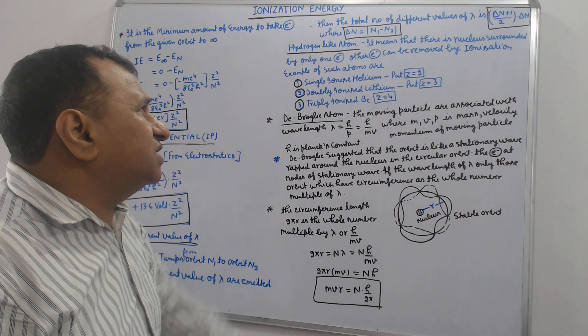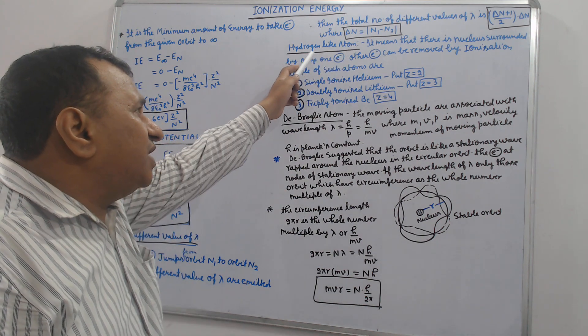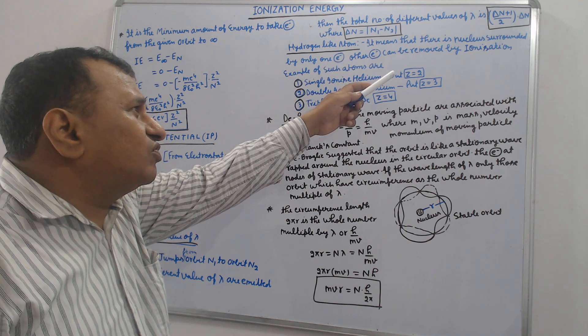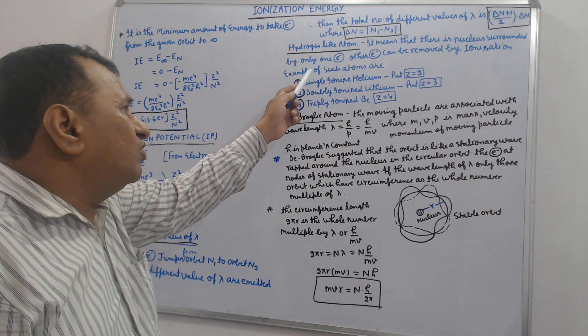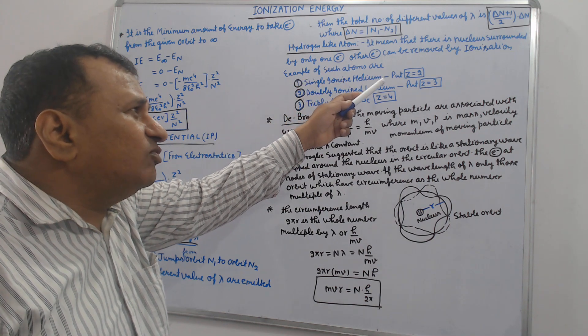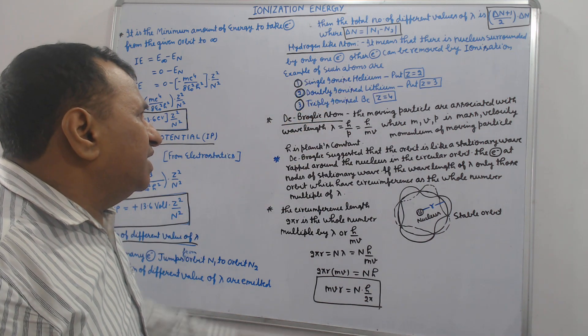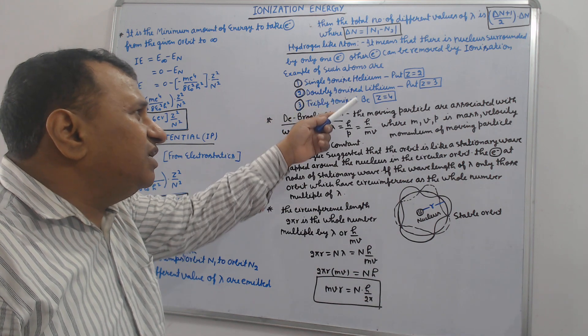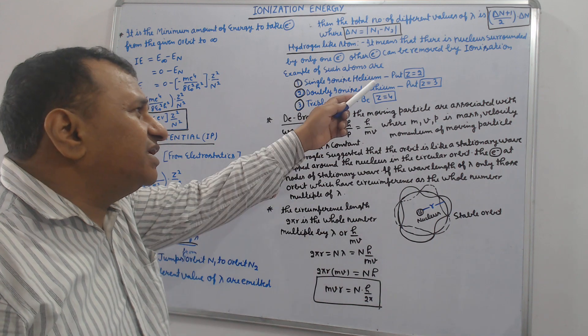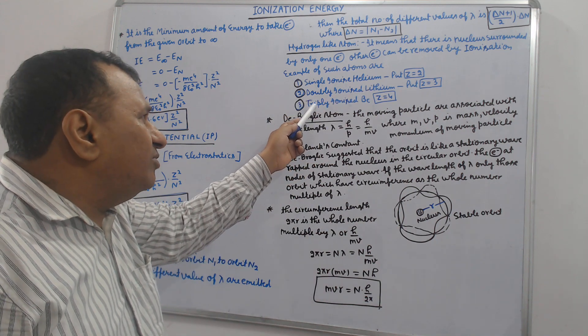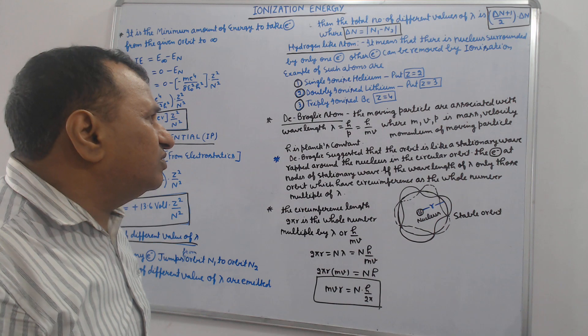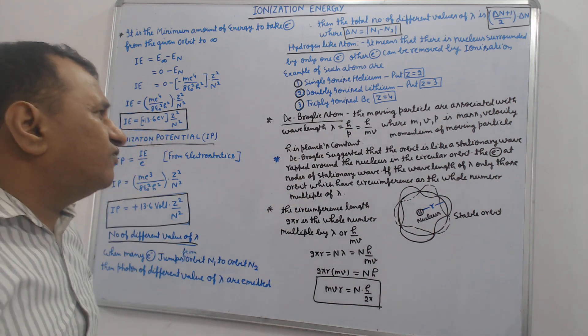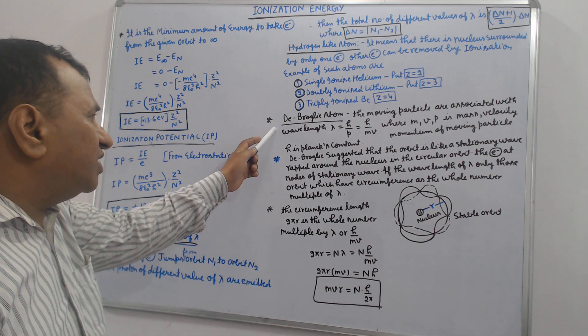Hydrogen-like atom means that there is a nucleus surrounded by only one electron. Other electrons can be removed by ionization. Examples of such atoms are single ionized helium, put Z equal to 2; double ionized lithium, put Z equal to 3; triple ionized beryllium, Z equal to 4.